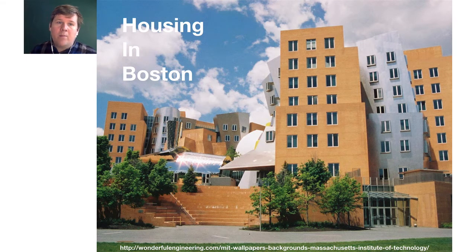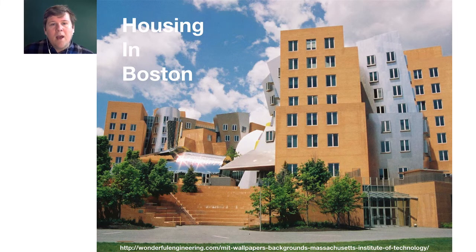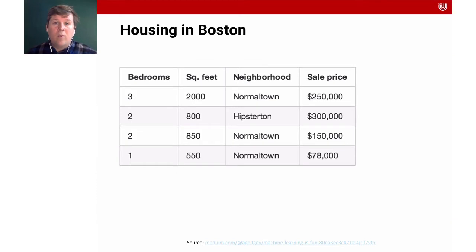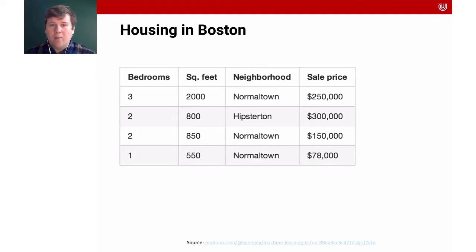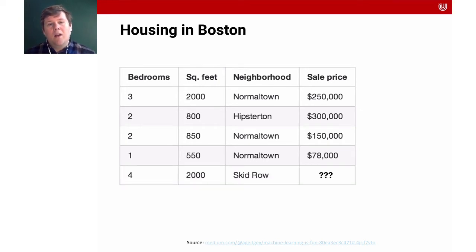One famous example for that is the prediction of housing prices. This is the dataset that you're going to work with — a dataset with houses in Boston for which you're going to predict the price based on historical prices. We have different instances, different houses for which we know how much they sold for, how many bedrooms they had, how big they were in square feet or square meters, and in which neighborhood they were located. We want to learn from past data to make predictions about the future in a fashion that generalizes.